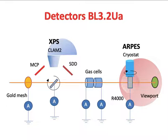This is the schematic diagram of our end station at beamline 3.2UA. Synchrotron light comes from the left hand side, passing through the gold mesh to monitor the photon flux coming into the sample. The sample is mounted on the ground and we monitor the drain current — how many electrons are coming out. We call this total electron yield.